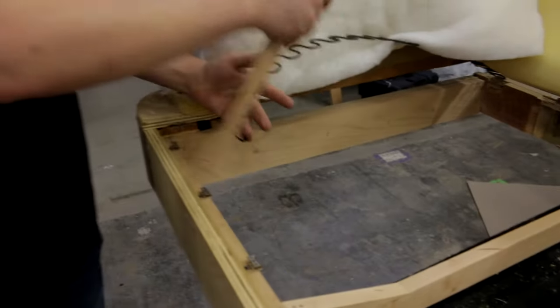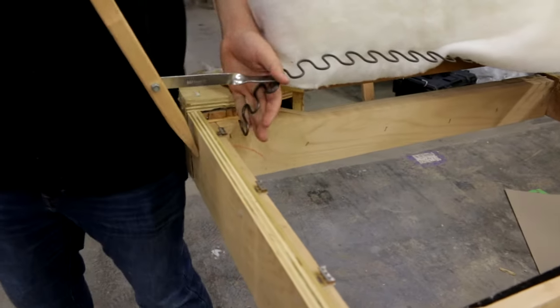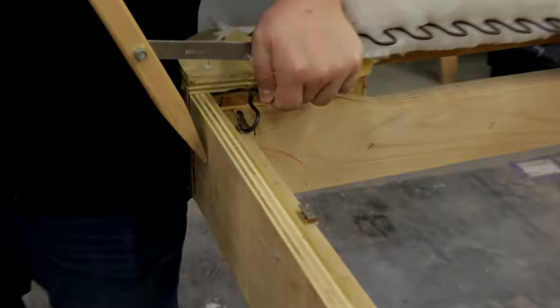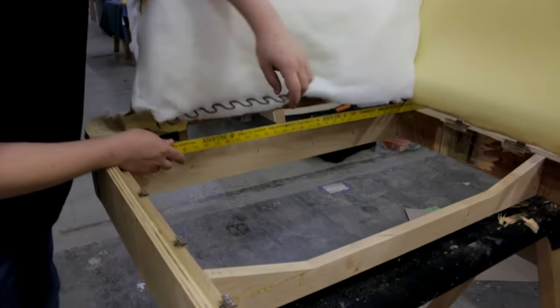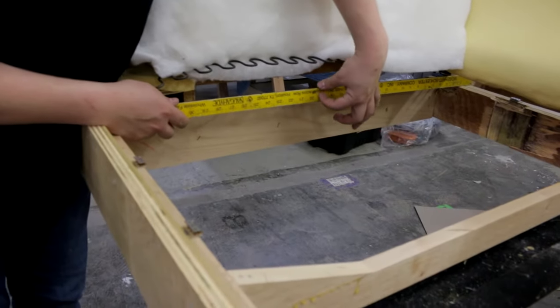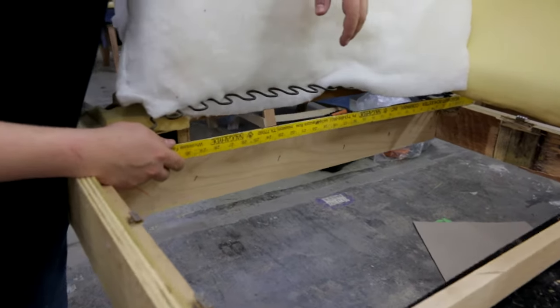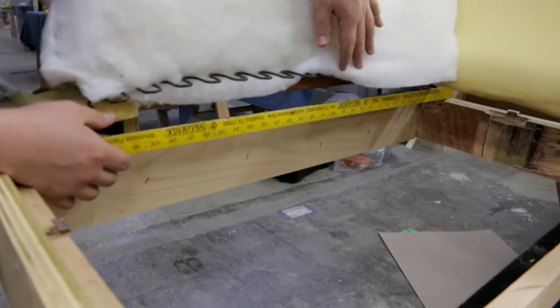Before I cut any more springs, I need to make sure we got the right length. To do that, I'm going to stretch it onto the frame and place a yardstick underneath without securing the spring. The top of the spring should be about one inch above the frame at the middle or at about the top of this ruler. We have a bit too much here, so we need to trim the spring.